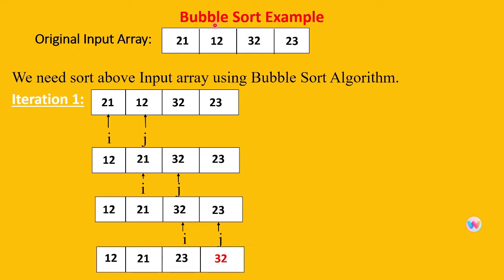These elements are stored in random order, so we need to sort this array using bubble sort. In iteration one, we keep the i pointer at the first location and the j pointer at the next location after i. So if i is at position 0, j will point at position 1. We compare the element at i with the element at j. If the j-th element is less than the i-th element, we swap them. Here 12 is less than 21, so swap: 12 will come to 21's place and 21 will take 12's place.